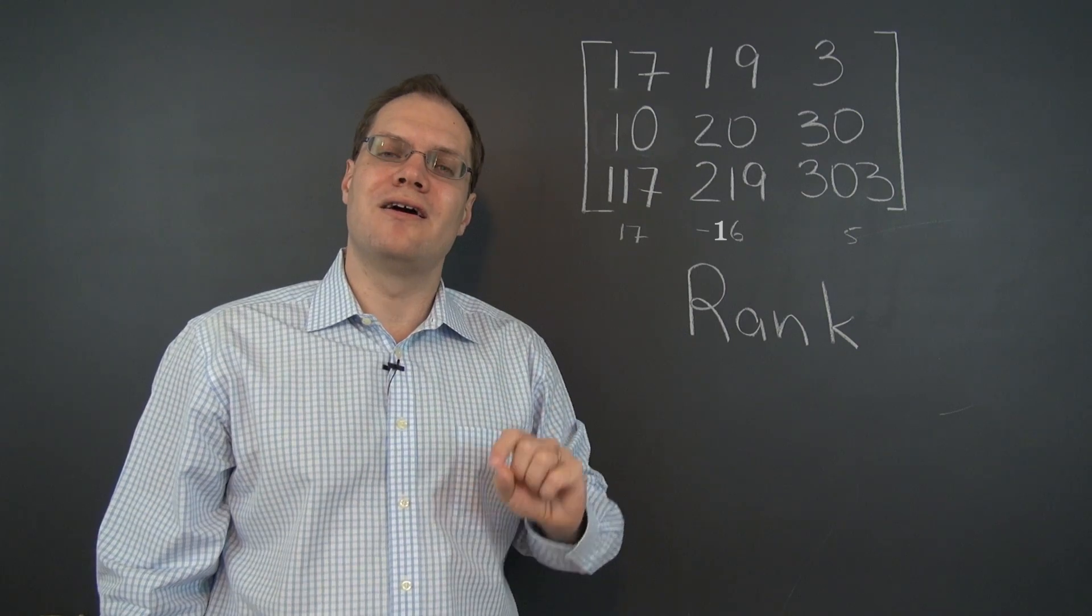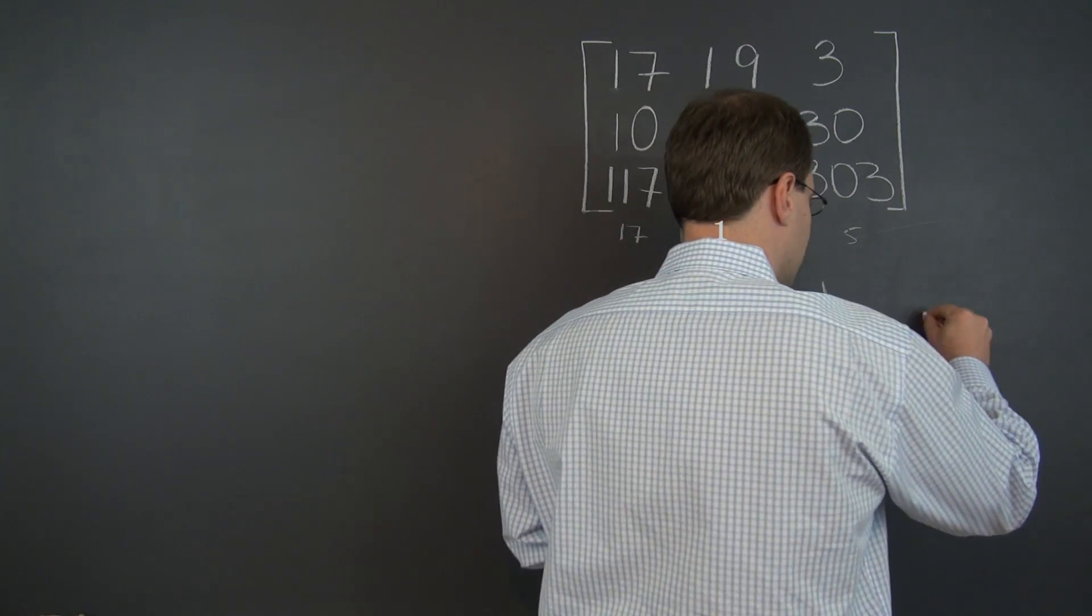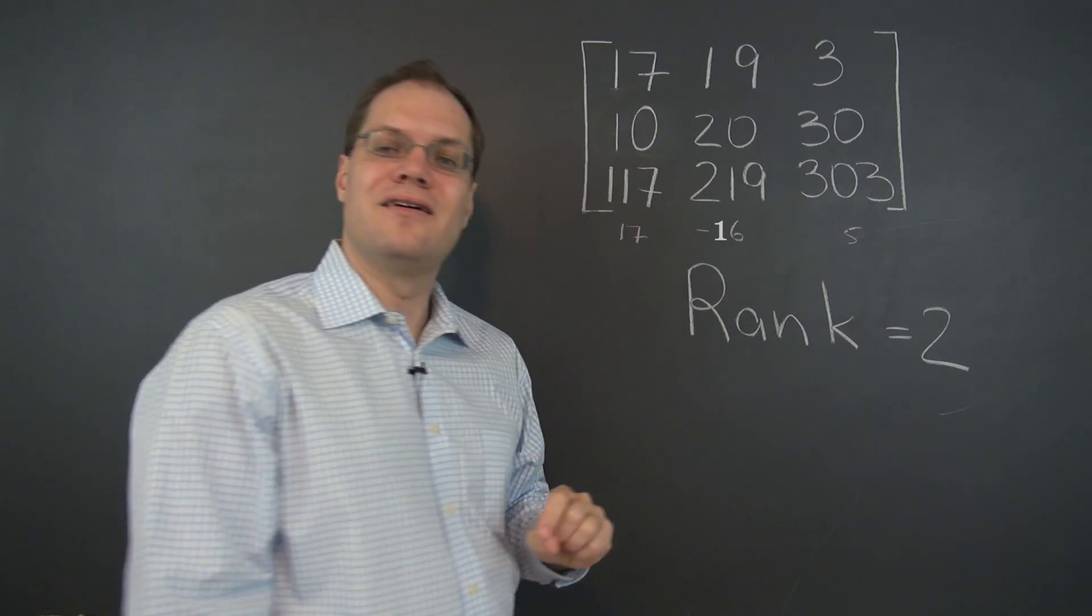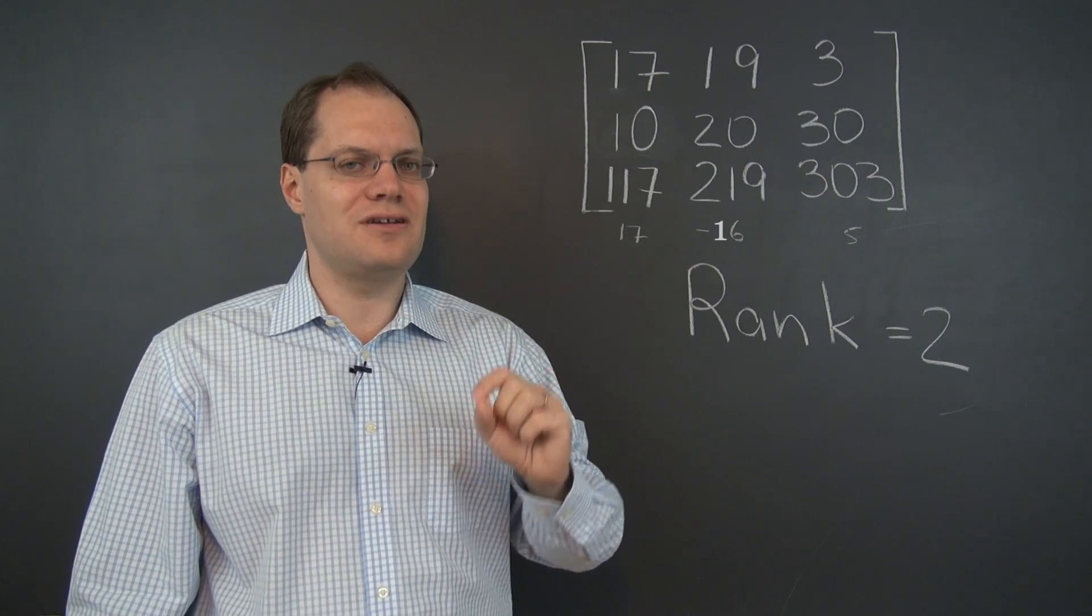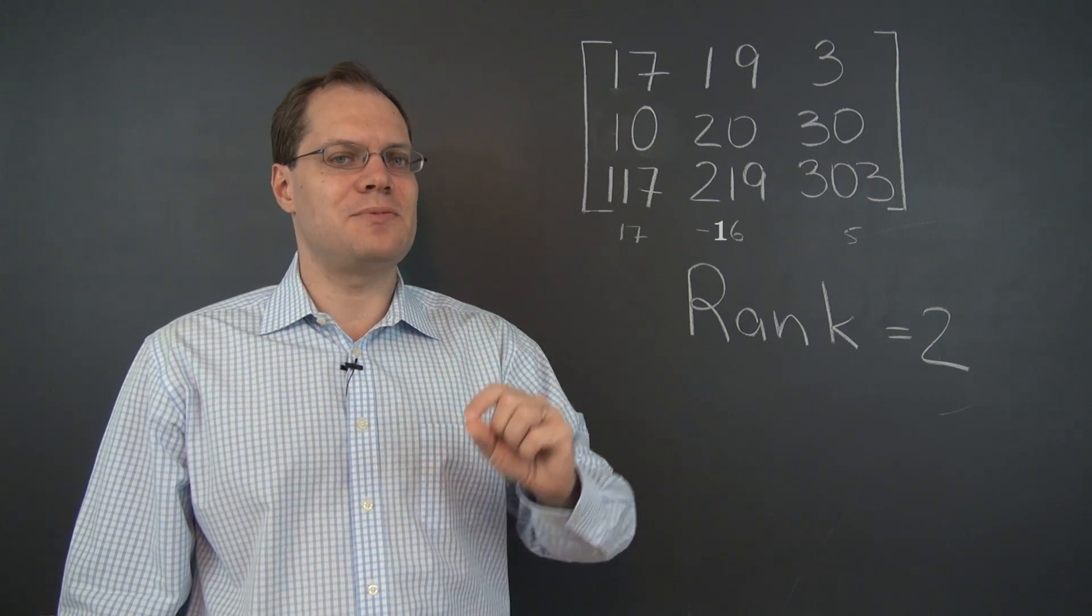Therefore the rank of the row space is 2. And the rank of the column space is therefore 2 as well, the dimension of the row space and the column space is 2.